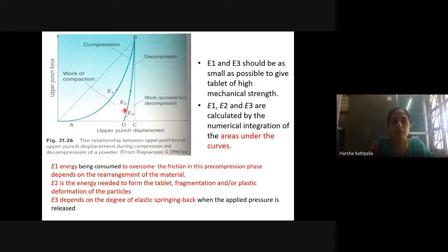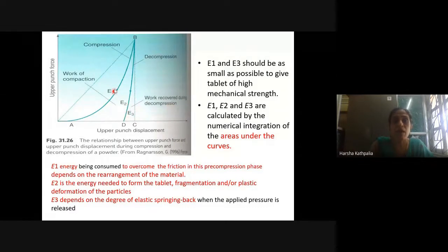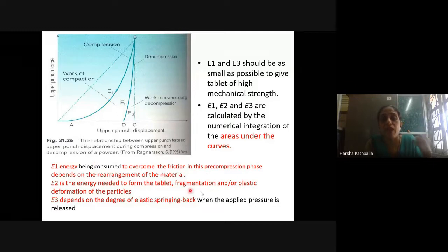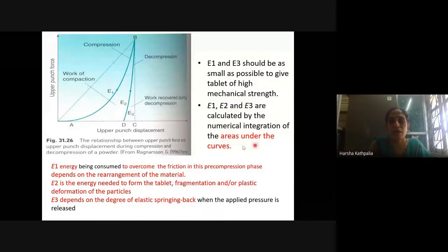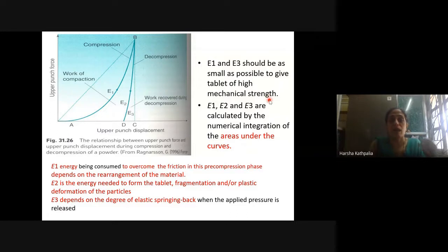E3 depends upon the degree of elastic springing back when the applied pressure is released — that is, the work recovered during decompression, the elastic recovery of the tablet during the decompression phase. E3 should be minimum, E1 should be minimum, and E2 should be maximum. E2 indicates the work of compression — the energy needed to form the tablet — which is involved in fragmentation and plastic deformation of the particles. E1, E2, and E3 are calculated by numerical integration of the areas under the curve.